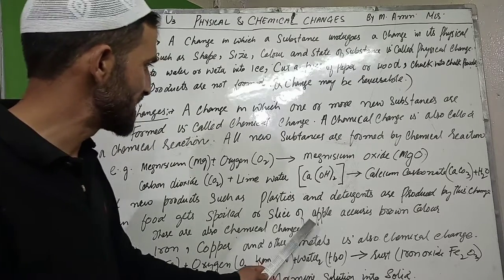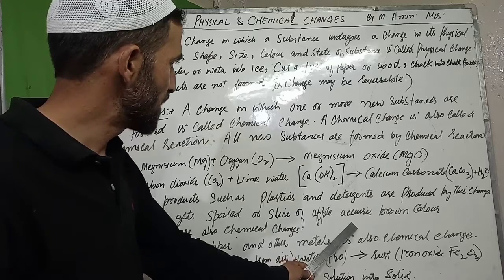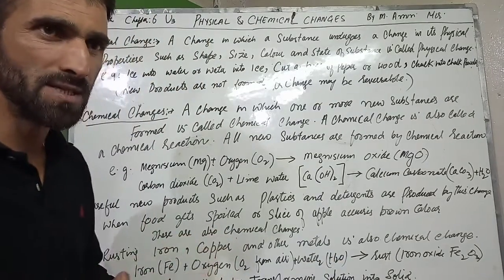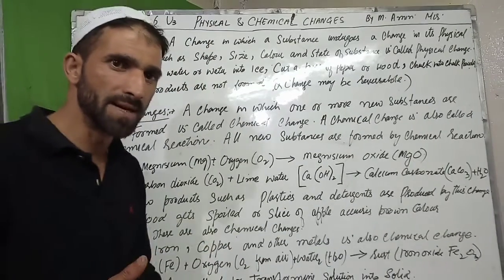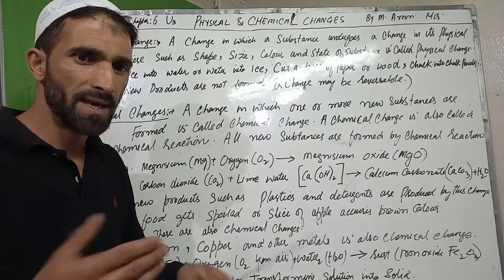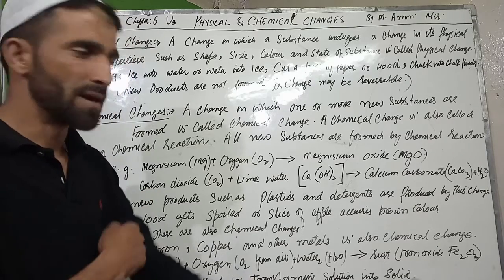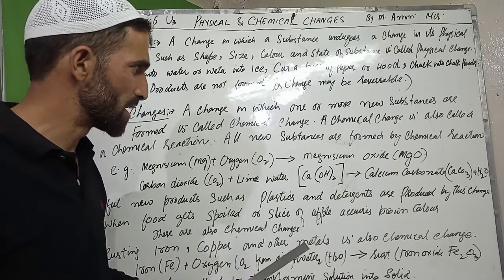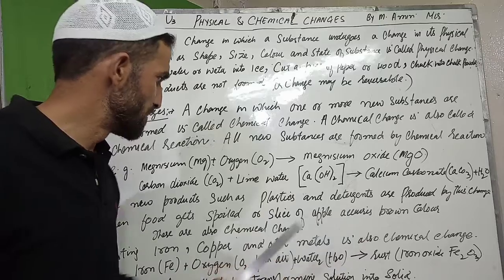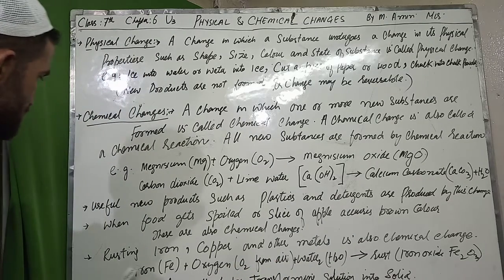A slice of apple turns brown — this reddish-brown color is also a chemical change. These are examples of chemical changes.